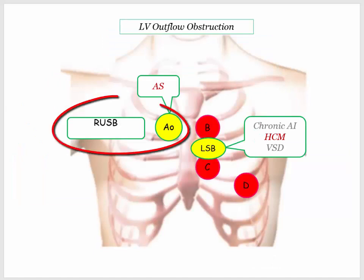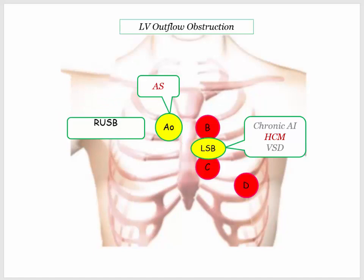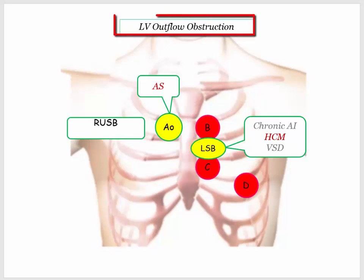Aortic stenosis is heard best at the right upper sternal border. Hypertrophic cardiomyopathy is noted at the left sternal border and is commonly described by exam maneuvers and/or a description of an outflow gradient. These two murmurs are described as creating LV outflow obstruction.